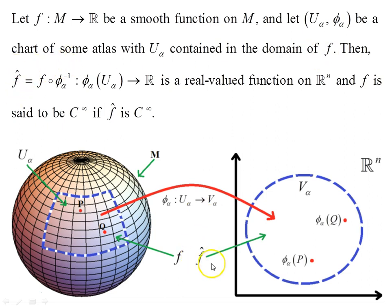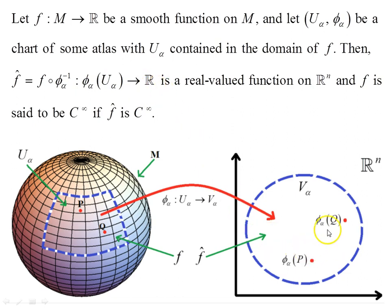When f is defined on the manifold and mapped over to Euclidean space, we call the result f̂. So f̂ = f ∘ φ⁻¹ — that's the inverse map taking us back to U, which f then maps to the reals. This is a real-valued function on ℝⁿ, and f is said to be class C∞ if f̂ is class C∞. Under the map φα, point p goes to φα(p) and point q goes to φα(q).